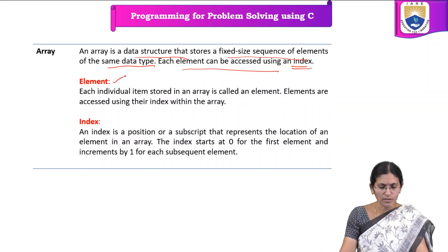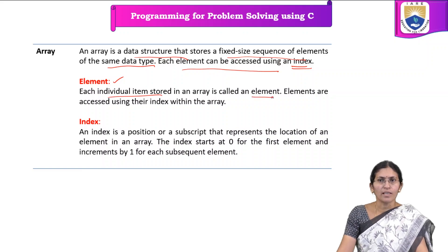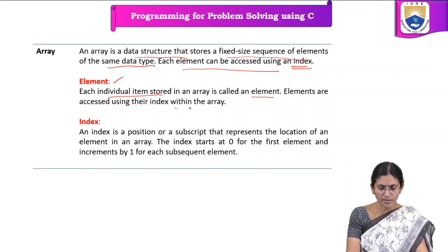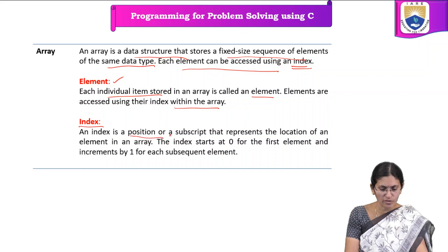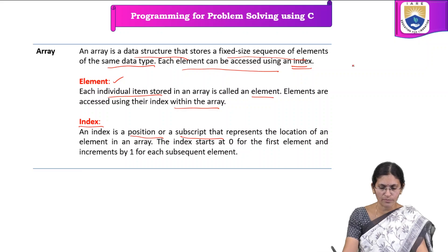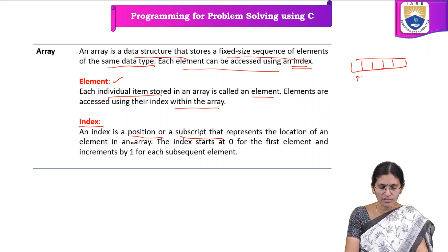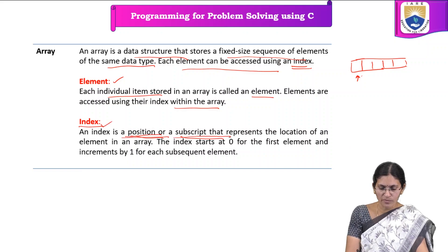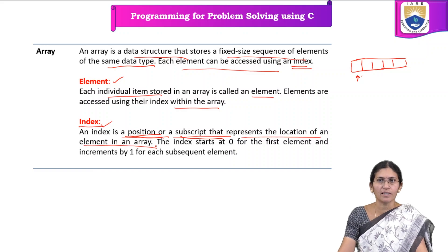The individual item stored in an array is called an element. Elements can be accessed using their index within the array. Index specifies the position or subscript that represents the location of an element in an array. For example, in an array with 5 elements, we can refer to each element by using the index, which specifies the position at which the element is stored.